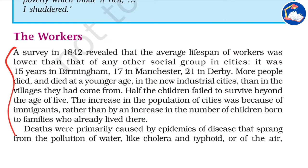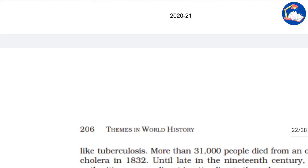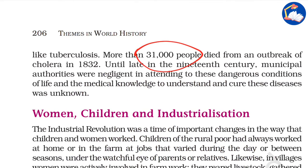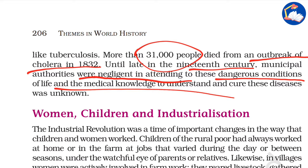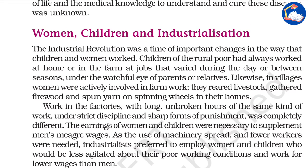A survey in 1842 revealed that the average lifespan of workers was lower than that of any social group in cities. In Birmingham it was 15 years, in Manchester 17, and in Derby 21. More people died mainly due to epidemics and other diseases. More than 31,000 people died due to an outbreak of cholera in 1832. Until late in the 19th century, municipal authorities were negligent in attending to these dangerous conditions of life.